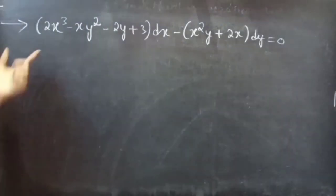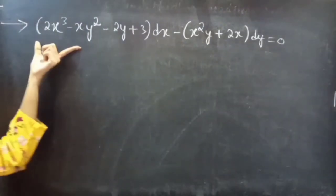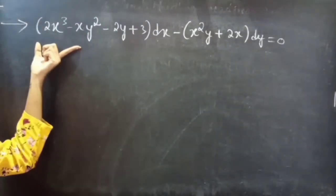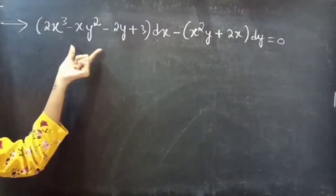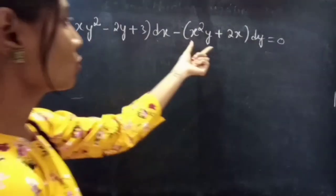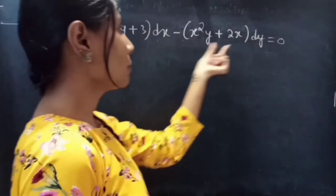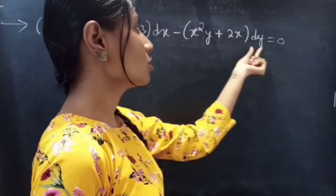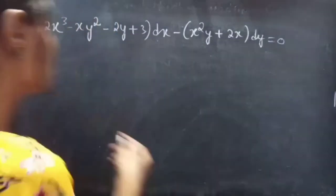Problem: solve (2x³ - xy² - 2y + 3) dx - (x²y + 2x) dy = 0.